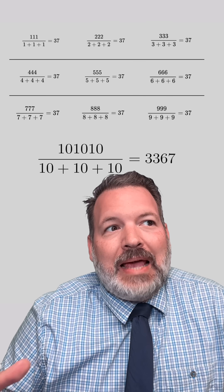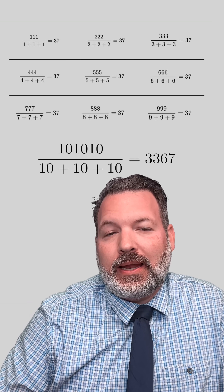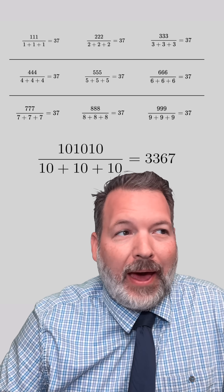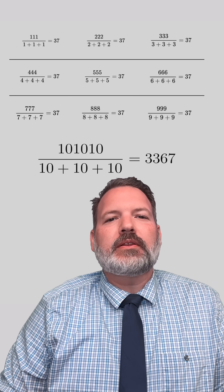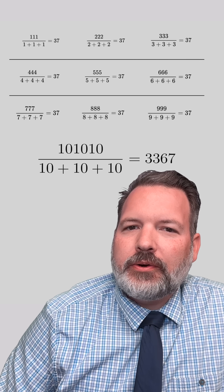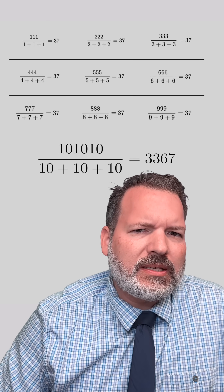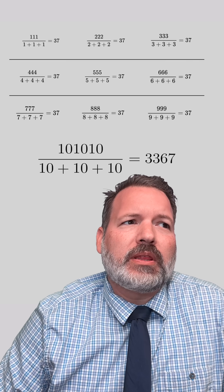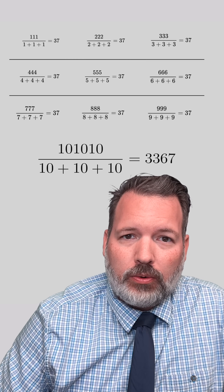On one level I don't want to ruin the fun, but on another level, I am who I am. 10, 10, 10 over 10 plus 10 plus 10 ruins the pattern — it is not 37 anymore. I do still think there's something cool going on here, but to understand it, let's try first to understand why this was even working out with the individual digits 1 through 9.